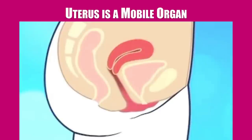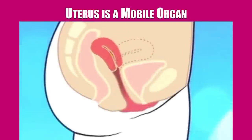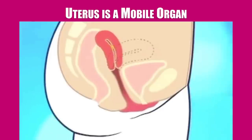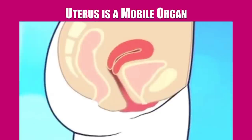Physiological functions of the body require that the uterus cannot be a fixed organ. As the bladder becomes full, the body of the uterus will have to be pushed posteriorly towards the rectum, and when the bladder is emptied after passing urine, the uterus has to be brought back to its anterior position. This is aptly done by the round ligaments. Similarly, when the woman becomes pregnant over nine months, the normal-sized uterus enlarges up to the xiphisternum. This cannot happen if the uterus is a fixed organ.